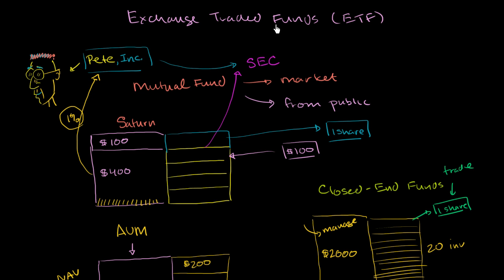On an exchange-traded fund, only approved people, and these are usually large institutions, can go to the fund and say, I want to buy or redeem a big block of shares. So in an exchange-traded fund, instead of creating one share at a time, it might create 5,000, or 10,000, or 100,000 shares at a time.